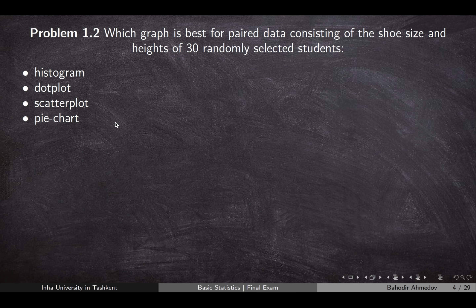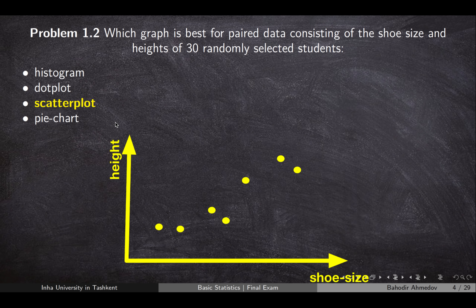The second question: which graph is best for paired data containing the shoe size and the height of randomly selected students? When the data comes in a pair, the best way to show this is the scatter plot. It's a plot where you put each point depending on shoe size and height, and it's a very good tool for seeing the dependency between two data sets.